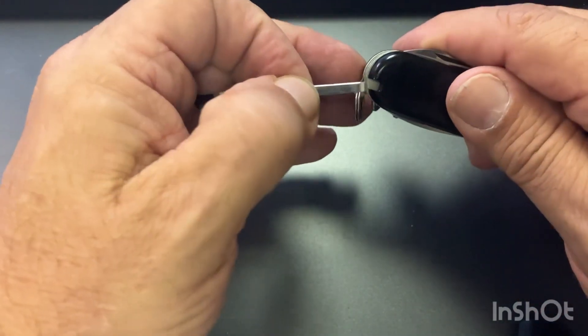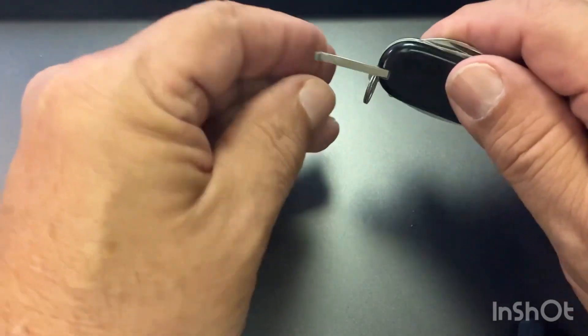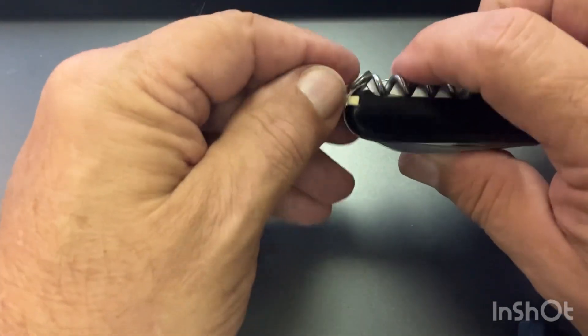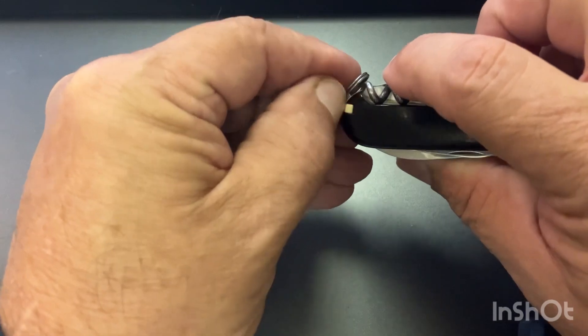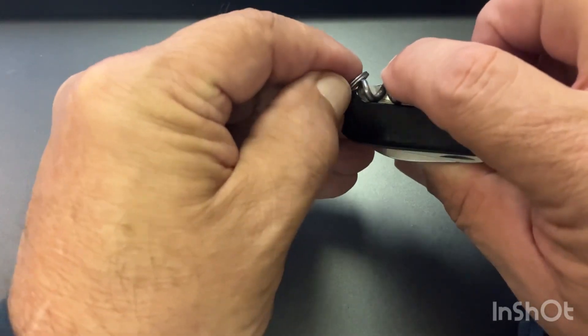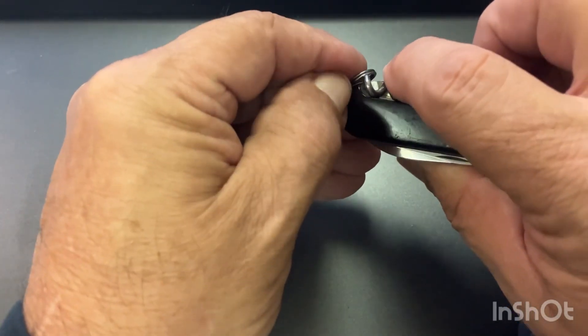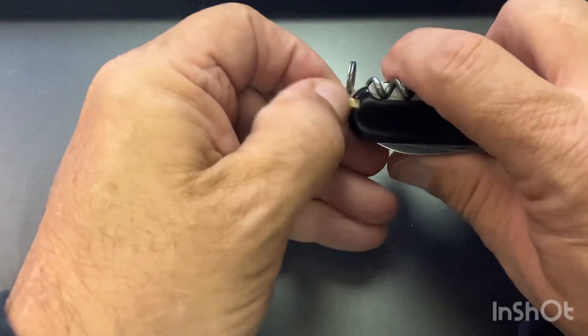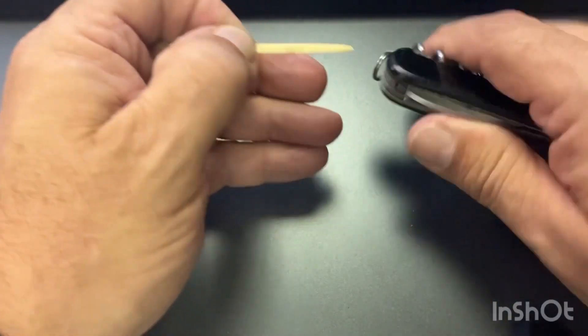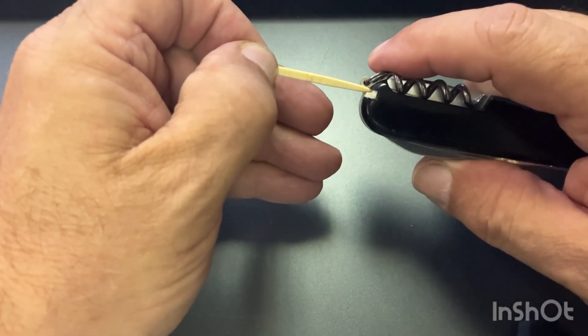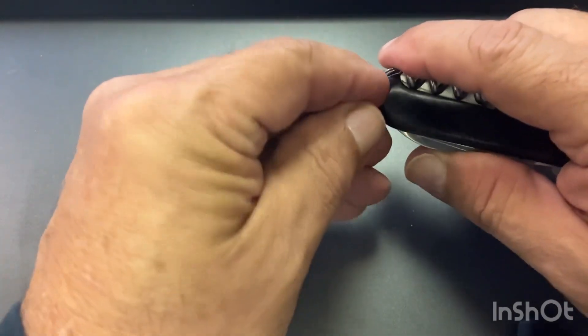It's got tweezers, which some people like them, some people aren't real fond of them, but they're okay. They work. And then it has a toothpick, which I don't use a toothpick for a toothpick. I don't use it for just about anything else, but I don't normally pick my teeth with it.